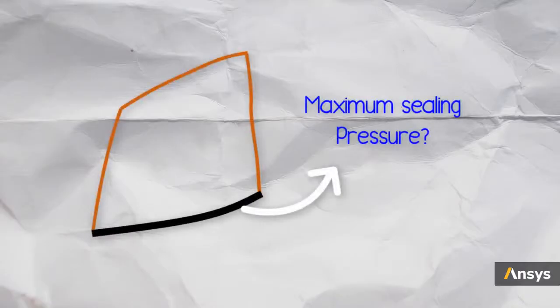A key aspect of a car door seal design is to see how much sealing pressure it generates when the glass window is closed. In this example, we will use simulation to assess one such design and discuss how to improve the design if it does not meet the design criteria.